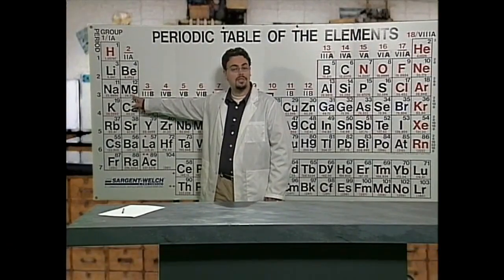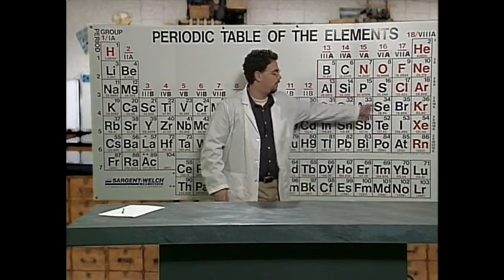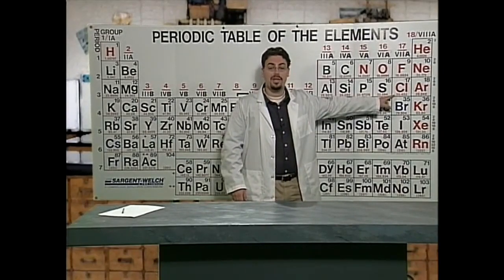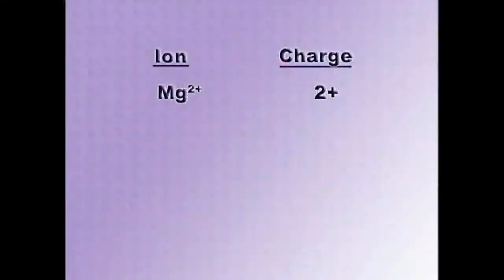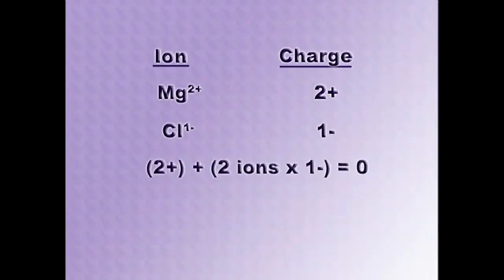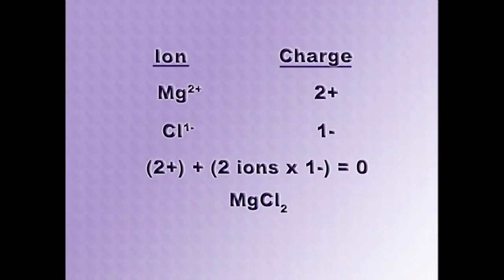For example, magnesium chloride: magnesium is in group 2, so it's a metal that gives up two electrons to become stable, creating a cation with a +2 charge. Chlorine gains one electron, creating an anion with a -1 charge. We would need two chloride ions for every one magnesium ion so the overall charge is zero. The formula for magnesium chloride is MgCl₂. The subscript 2 after Cl represents the number of chloride ions in the formula. The subscript of 1 for Mg is understood but not written.